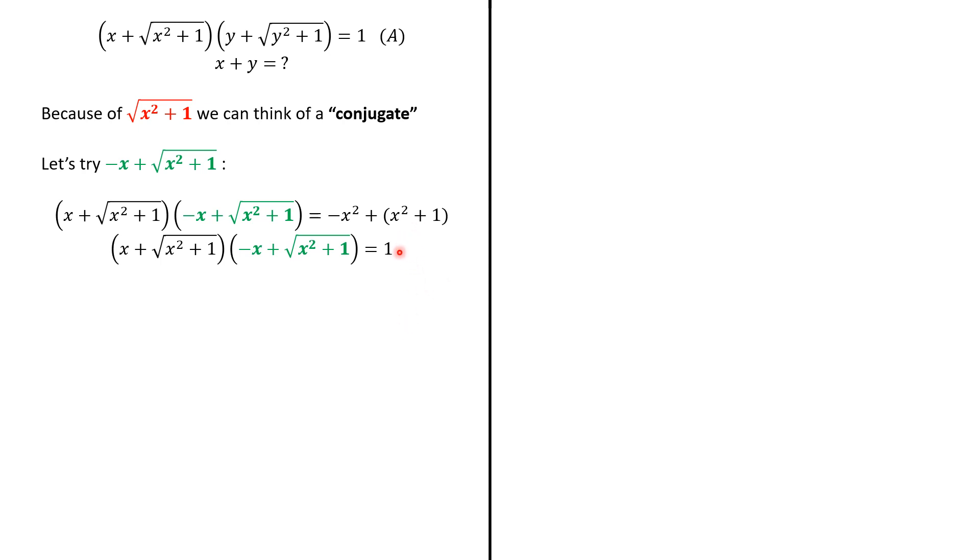So, if we divide by the original number, we have that 1/(x + √(x² + 1)) equals the proposed conjugate. Now, what we do is divide the relation (A) by the number x + √(x² + 1).